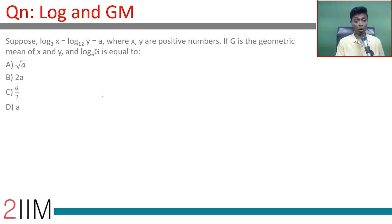Log x to the base 3 is a, log y to the base 12 is also a, where x and y are positive numbers. If G is the geometric mean of x and y, the log G to the base 6 would be?